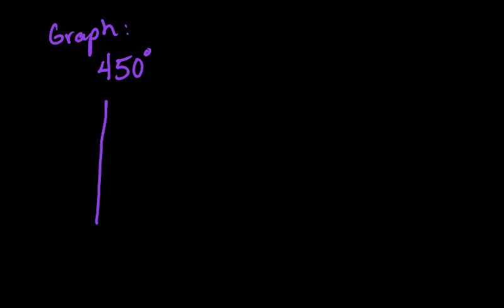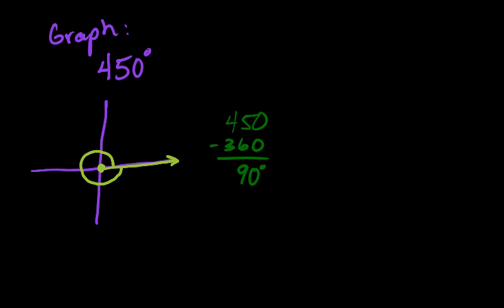So you are going to draw your coordinate plane. And think about it this way. 450 is greater than 360. So you know it's going to go all the way around at least once. Now, if you want to figure out how much more it's going to continue to spin, I would suggest that you take 450 and subtract 360. And if you do that with a calculator or in your head, that's 90 degrees.